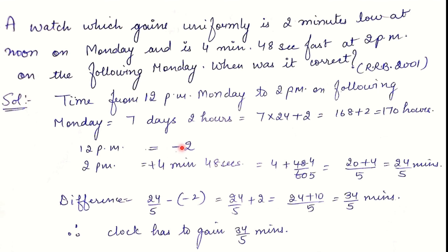At 12 PM Monday the watch is losing 2 minutes (denoted as −2), and after one week at 2 PM it is gaining 4 minutes 48 seconds, denoted with a plus sign. Converting 4 minutes 48 seconds into minutes gives 24/5 minutes. The total time gained by the watch over this period is 24/5 − (−2), because it first needed to recover the 2-minute loss and then gained further.